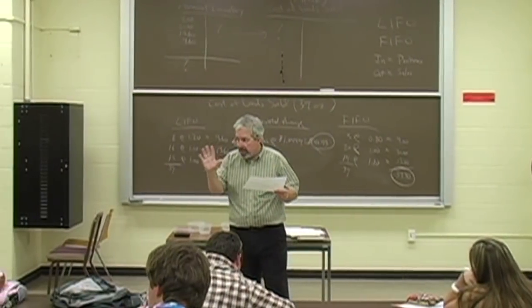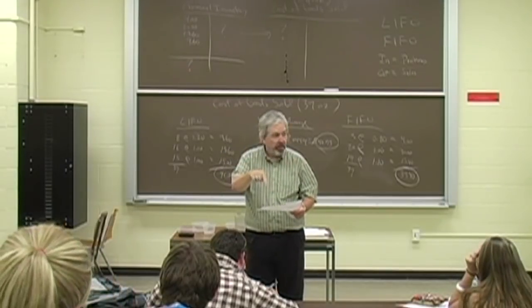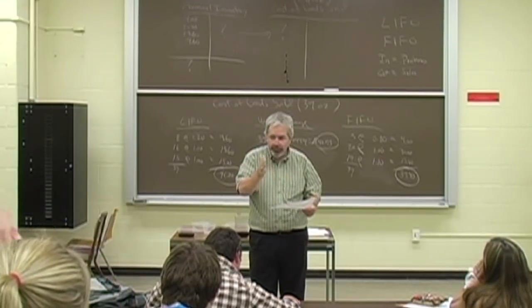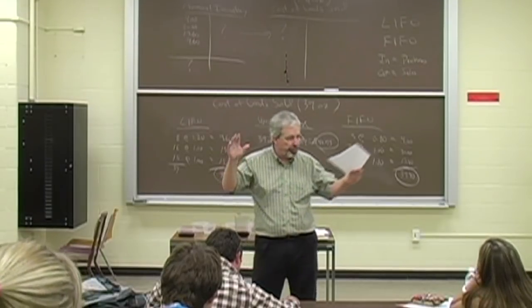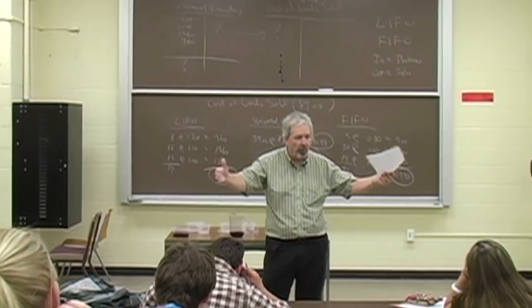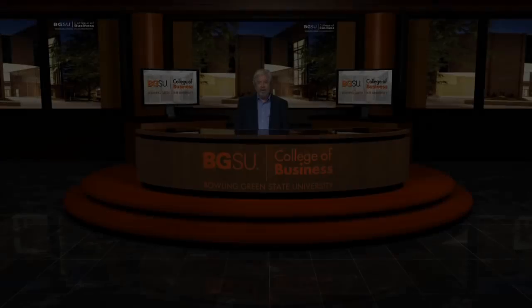So, what your assignment is in this area for tomorrow is come up with a net income for this bulk plant for the month of May under LIFO, FIFO, weighted average. Pick the method that you think gives the most appropriate net income for external users. There's not a right answer. You have to defend your choice.